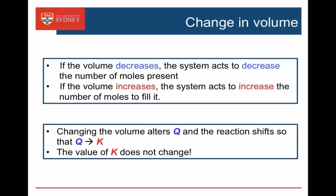Le Chatelier's principle says that if we decrease the volume, the system acts to decrease the number of moles present — it shifts to the side that has the fewer number of moles of gas. If we increase the volume, the system tries to increase it by shifting to the side that has more moles of gas. Again, what we're doing is altering Q; the reaction shifts because Q is not equal to K anymore. The value of K is the equilibrium constant, and at any given temperature it's a constant value — Q changes and not K.